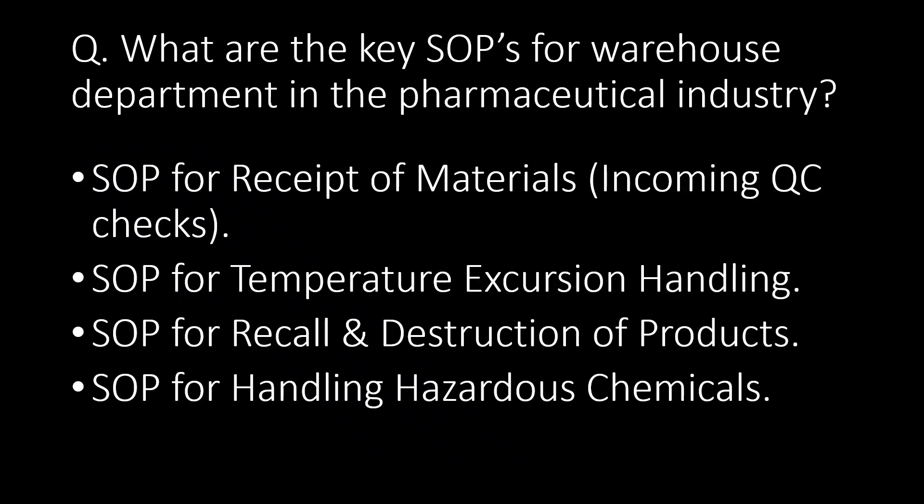What are the key SOPs for the warehouse department in the pharmaceutical industry? Key SOPs include: SOP for receipt of materials (i.e., incoming QC checks), SOP for temperature excursion handling, SOP for recall and destruction of products, and SOP for handling hazardous chemicals.